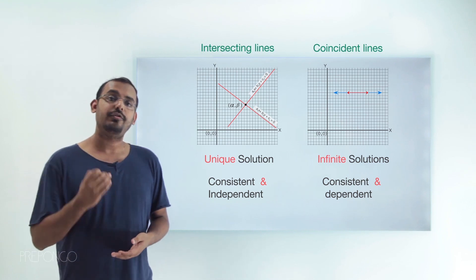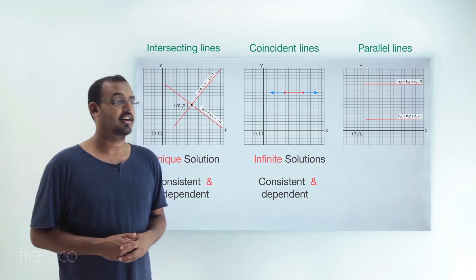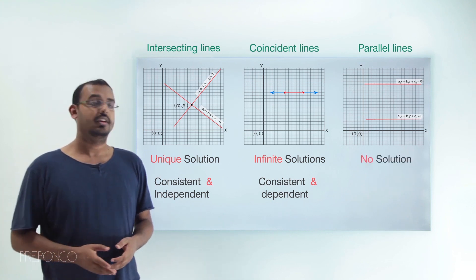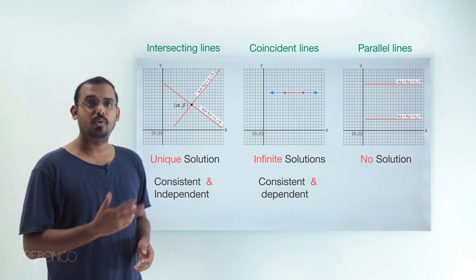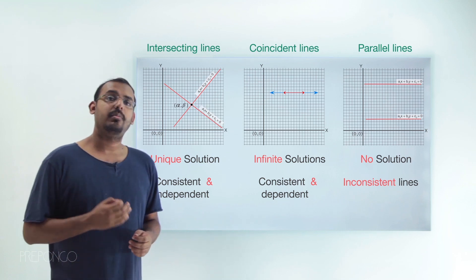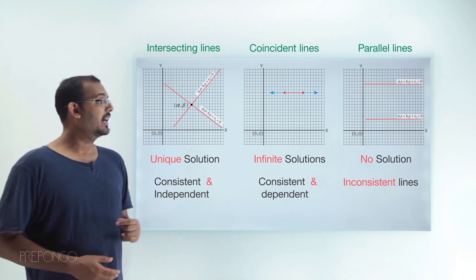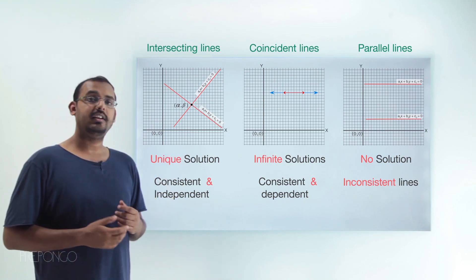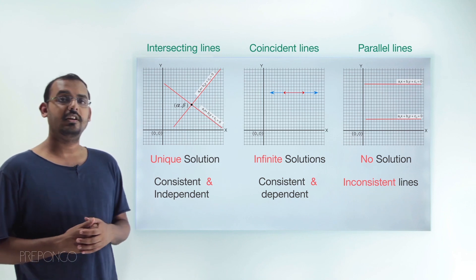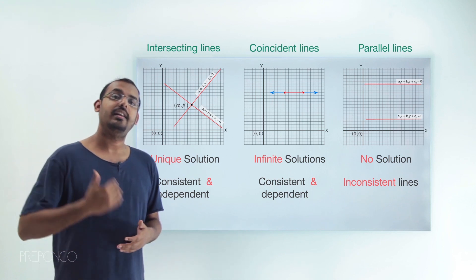These two cases are where we call the pair of linear equations to be consistent or solvable, because we can solve for the value of x and y. In the third case we have a set of parallel lines, meaning the pair of linear equations gives us no solution, because there is no point which can exist on both lines. In this case we call the system of linear equations to be inconsistent. So consistent means at least one solution, and inconsistent means no solution.